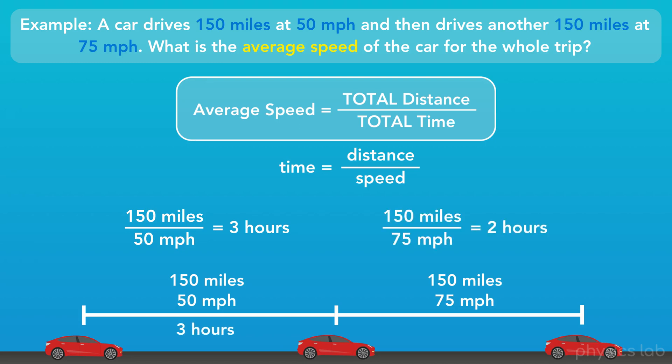For the second part of the trip, we have 150 miles divided by 75 miles per hour, which equals 2 hours. So, the total time for the entire trip is 3 plus 2, or 5 hours.